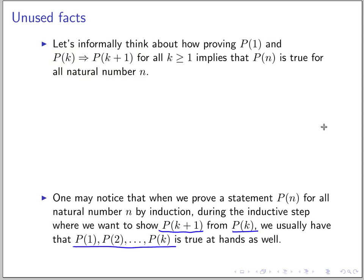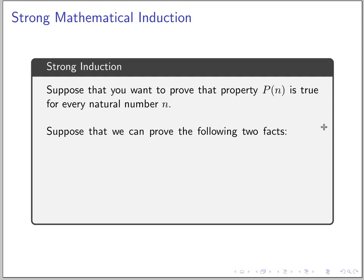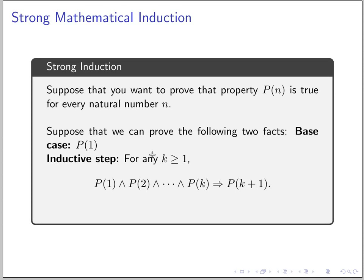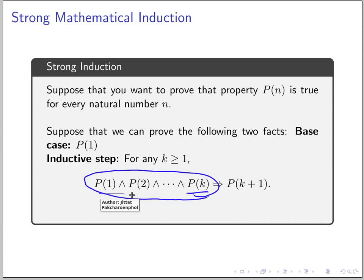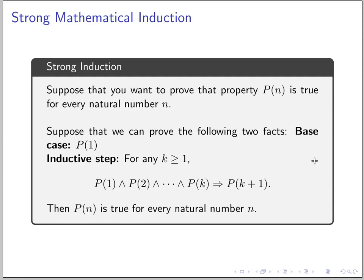To show P(K+1), instead of just using P(K), we can use everything from 1 onward. This is what we call strong mathematical induction. To show P(n) is true for every natural number n, we show two things: the base case P(1) is true, and in the inductive step, instead of just assuming P(K), we assume everything from 1 to K is true, and use all of this to prove P(K+1). The difference is we assume everything from the beginning.